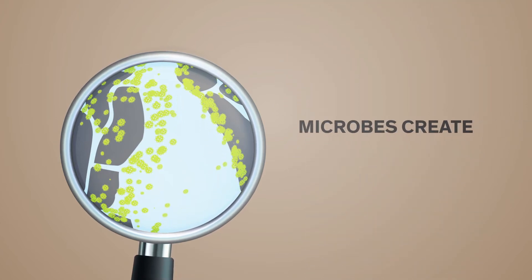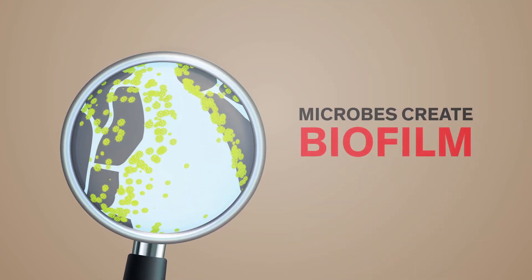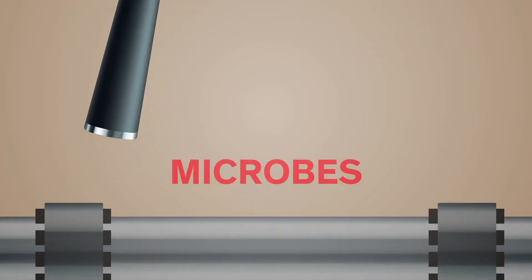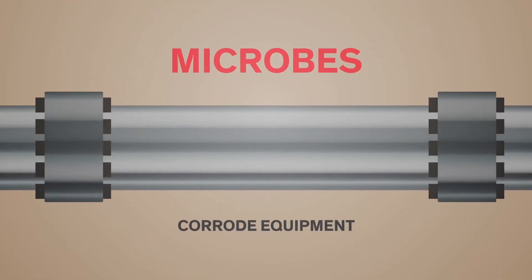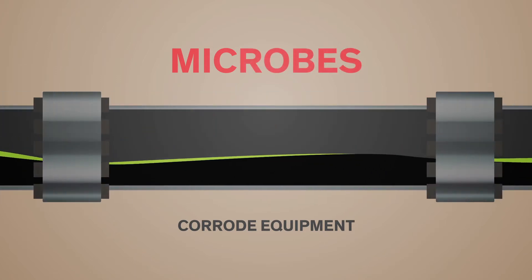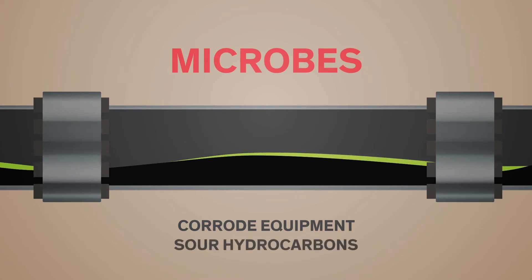When microbes grow, they form a biofilm that can plug the fractures and corrode pipes and equipment through microbially influenced corrosion, often referred to in the industry as MIC. Microbes can also produce sulfide, which sours hydrocarbons.